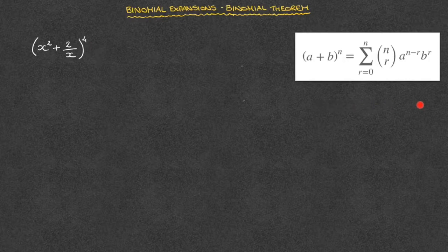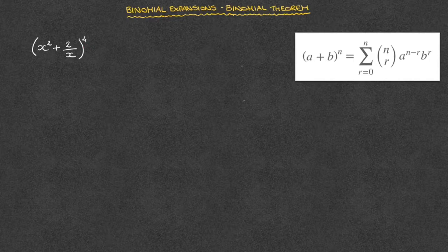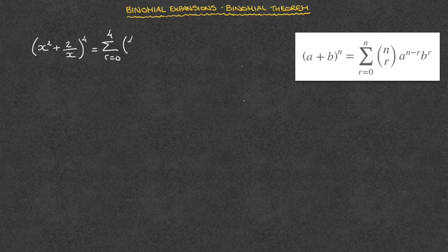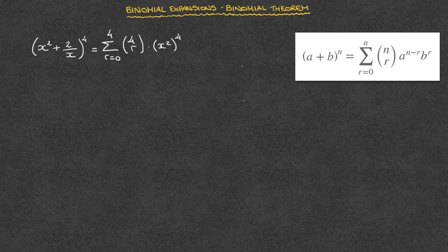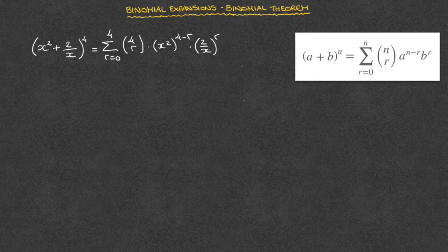So to get started, we can copy the right-hand side of this formula, replacing every a we see by x squared, every b by 2 over x, and every n by 4. In other words, we start by writing that this equals the sum from r equals 0 up to 4 of the binomial coefficient 4r times, in parentheses, x squared raised to the power of 4 minus r, times, in parentheses, 2 over x raised to the power of r.